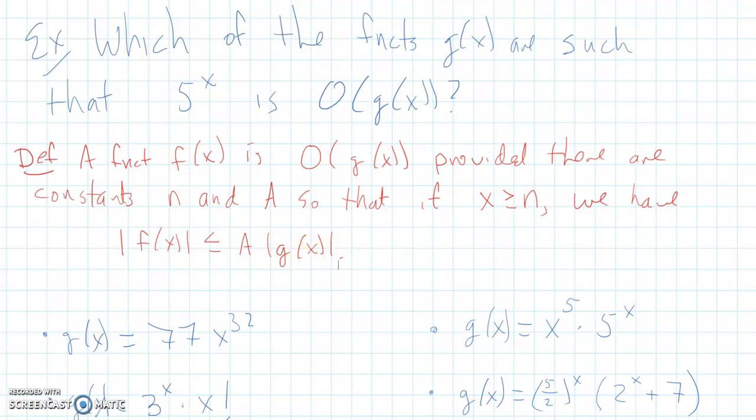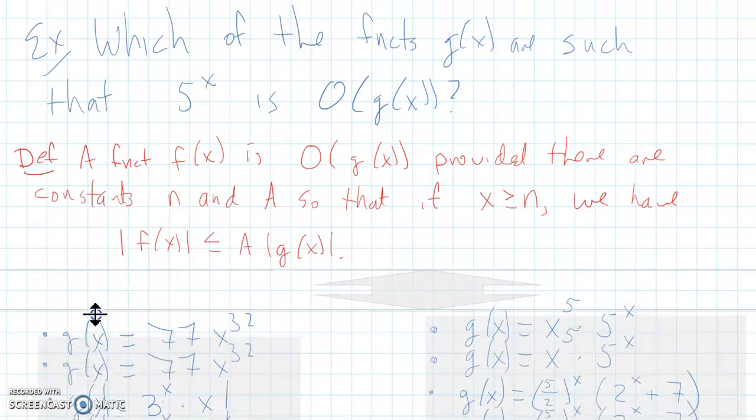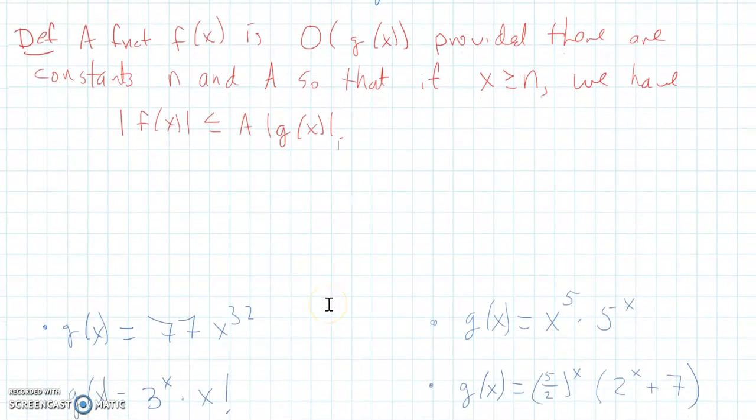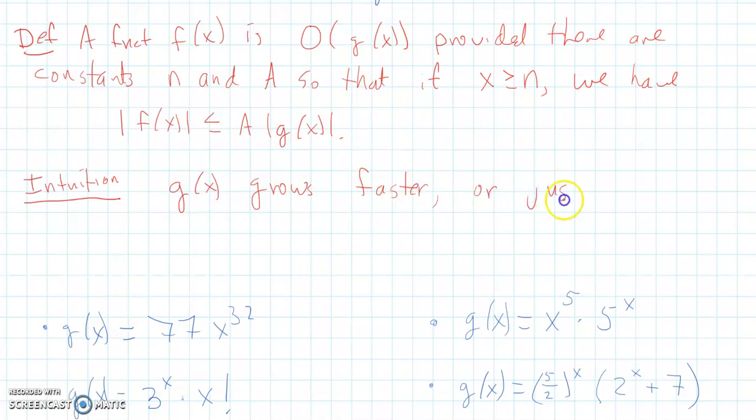Now, I realize that this can seem kind of obtuse and slightly unhelpful, but what I want you to understand is the essence of what this is saying. The intuition is the following: g of x grows faster or just as fast as f of x. So that's what we really mean by this, and that's what I want you to keep in mind when you're working out these types of problems.